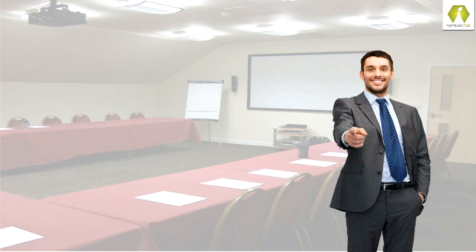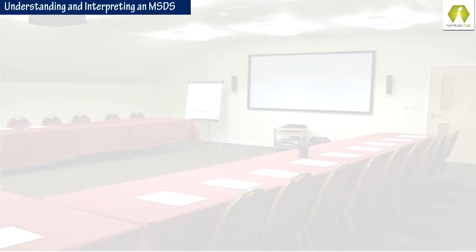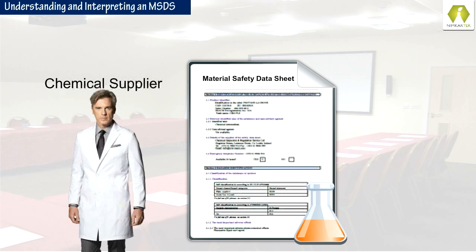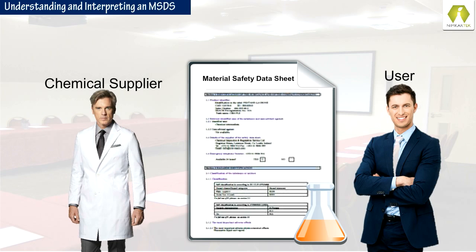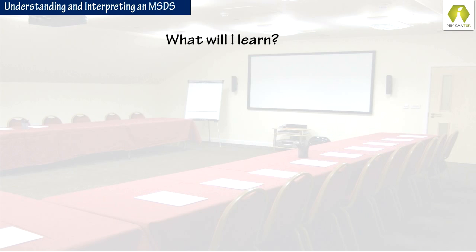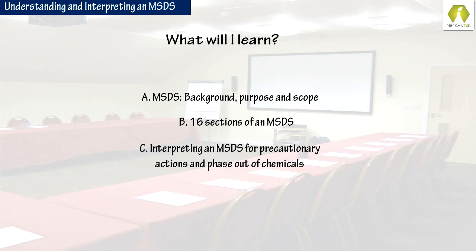Let me tell you about this module on understanding and interpreting an MSDS. Material Safety Data Sheets or MSDS are documents given by suppliers of industrial chemicals to inform users about the hazards of a chemical and the hazardous components in a chemical. In this module, you will learn about the background of the MSDS document and its purpose and scope. This module will describe the 16 sections of an MSDS document and how to interpret an MSDS document to implement actions for precautions or phase-out of chemicals.